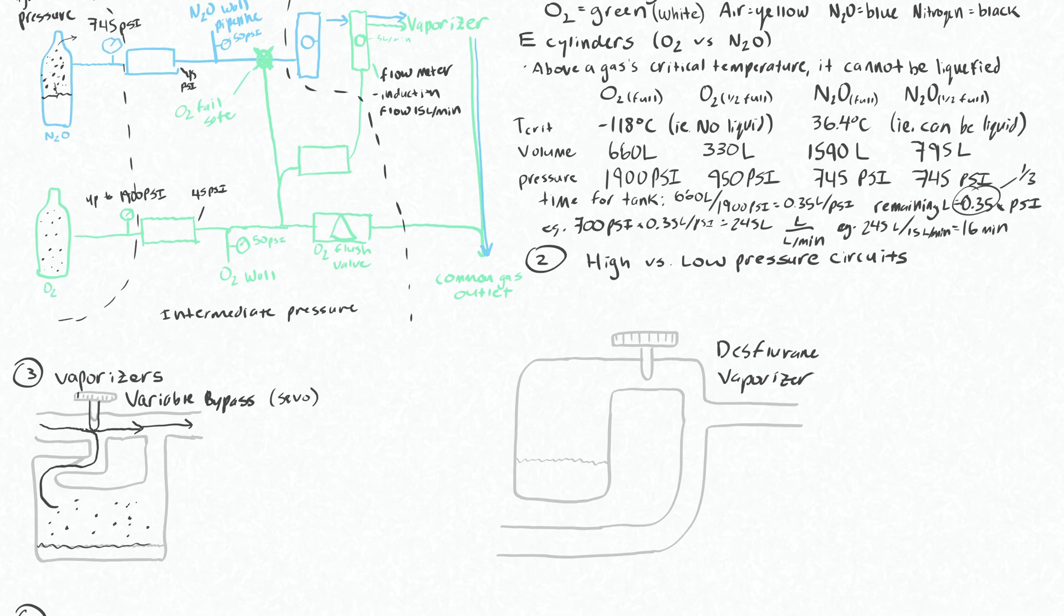This works because sevo is a liquid at room temperature. It boils at 58 degrees Celsius, which means that at room temperature it will be a liquid. Any liquid in an enclosed space actually does have a predictable amount of that substance in the gas form above it.